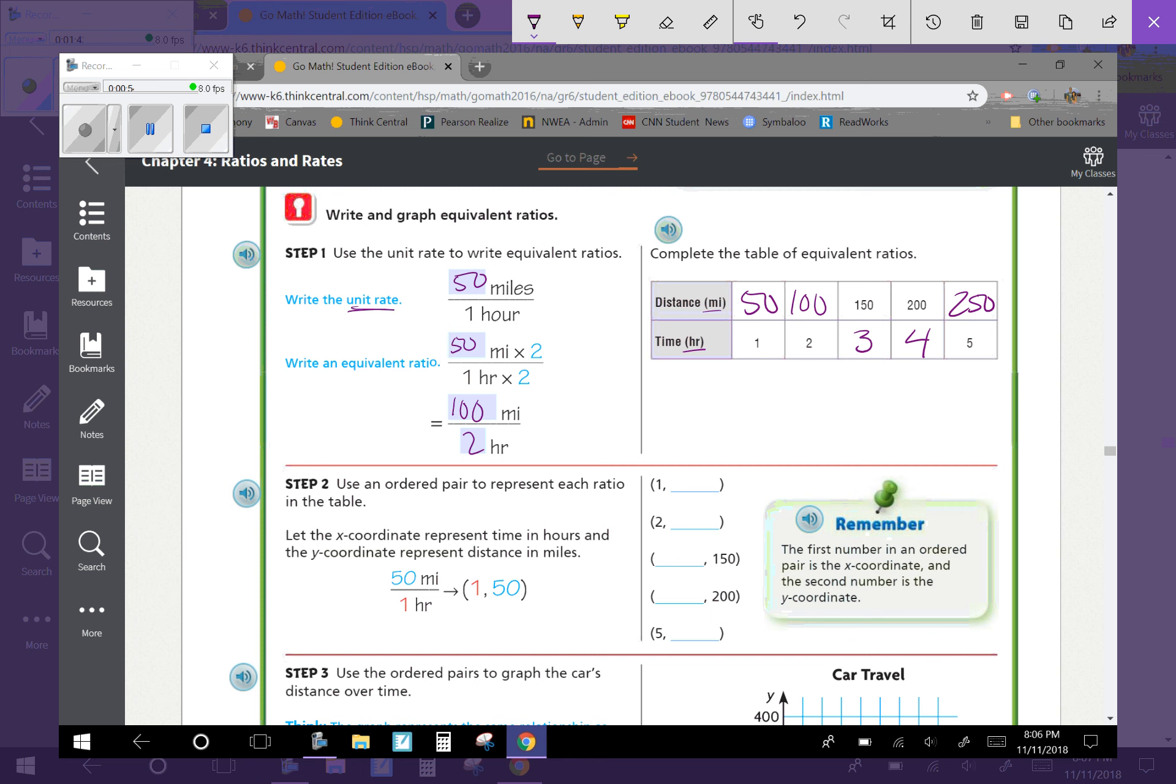This we've been doing the last couple of days. But now we're going to use Step 2, which is a little bit new. We're going to use an ordered pair to represent each ratio in the table, so we're going to write them as coordinates. We're going to let the x-coordinate represent time in hours and the y-coordinate represent distance in miles.